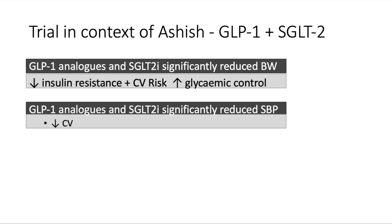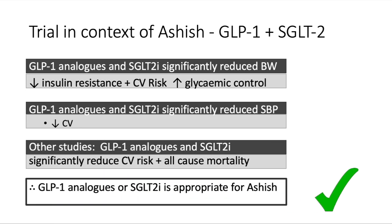GLP-1 and SGLT-2 inhibitors, on the other hand, were shown to significantly reduce body weight, which improves glycaemic control, reduces insulin resistance, and reduces cardiovascular risk. The cardiovascular risk is further reduced due to the significant reductions in systolic blood pressure by these drug classes. A search of wider literature in patients with sub-optimally controlled type 2 diabetes on metformin alone with atherosclerotic cardiovascular disease showed that these drugs can significantly reduce cardiovascular risk and also reduce all-cause mortality. Therefore, these drugs are probably the best ones for Ashish to be taking.